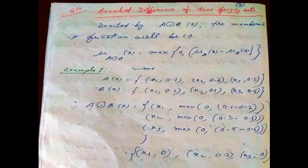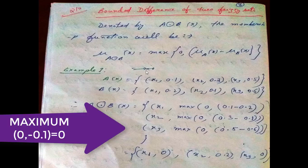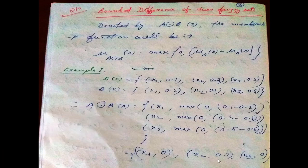So the result is: X1 = 0, X2 = 0.2, X3 = 0. Therefore, the bounded difference between these two fuzzy sets is {X1/0, X2/0.2, X3/0}.